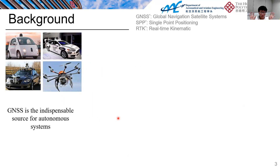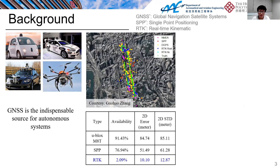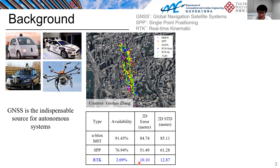GNSS is usually used for many applications, especially for autonomous systems, including autonomous vehicles and unmanned aerial vehicles. However, in this urban canyon test in Hong Kong — a typical urban canyon — you can see this is the commercial u-blox receiver. The 2D error can reach like 80 meters, which is not acceptable for autonomous applications. For single-point positioning based on raw measurements, we can get an error of about 50 meters, and even for RTK we get a mean 2D error of around 10 meters.